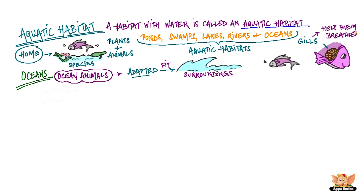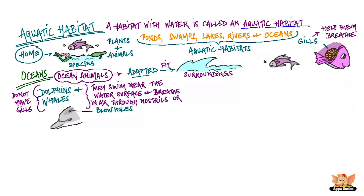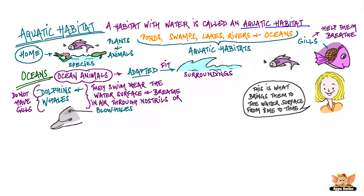Some animals like dolphins and whales do not have gills. They swim near the water surface and breathe in air through nostrils or blowholes that are located on the upper parts of their heads. This is what brings them to the water surface from time to time.